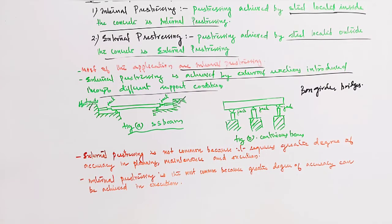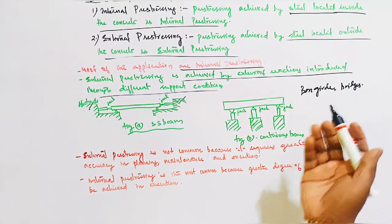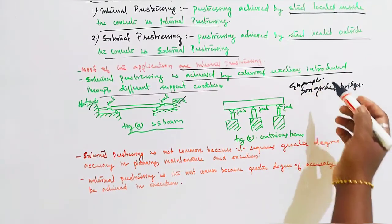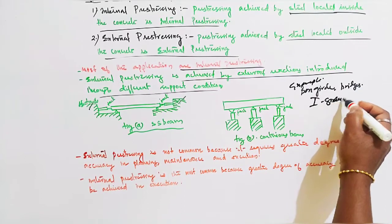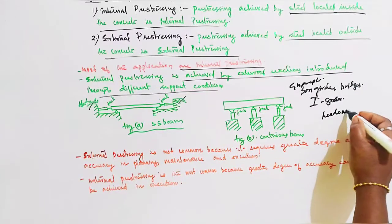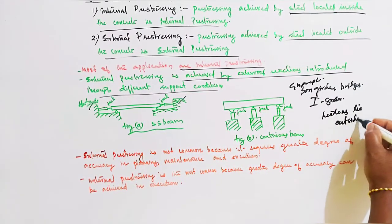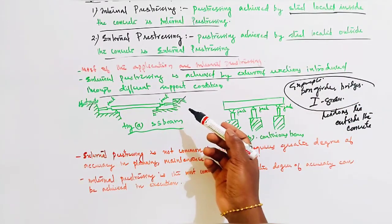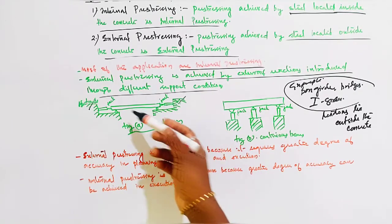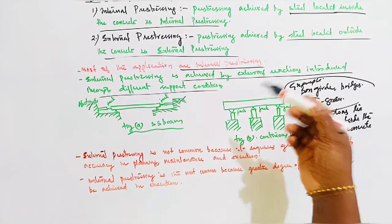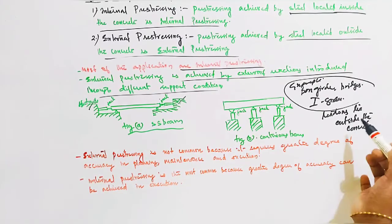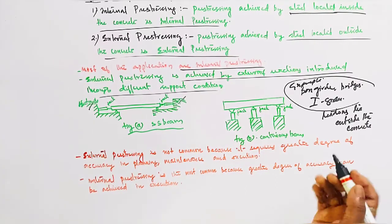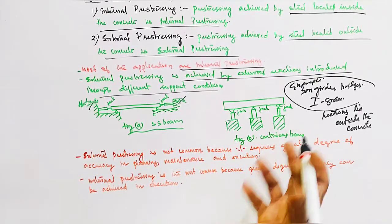Pre-stressed with the tendons. We have to do external pre-stressing. Steel is located outside the concrete. Box girder bridge is an example - that is an I-girder, I-shape girder. Tendons lie outside the concrete. So the example here covers support condition, external reactions, support jacking, simply supported and continuous. That is external pre-stress: box girder, I-girder bridges, tendons lie outside the concrete.